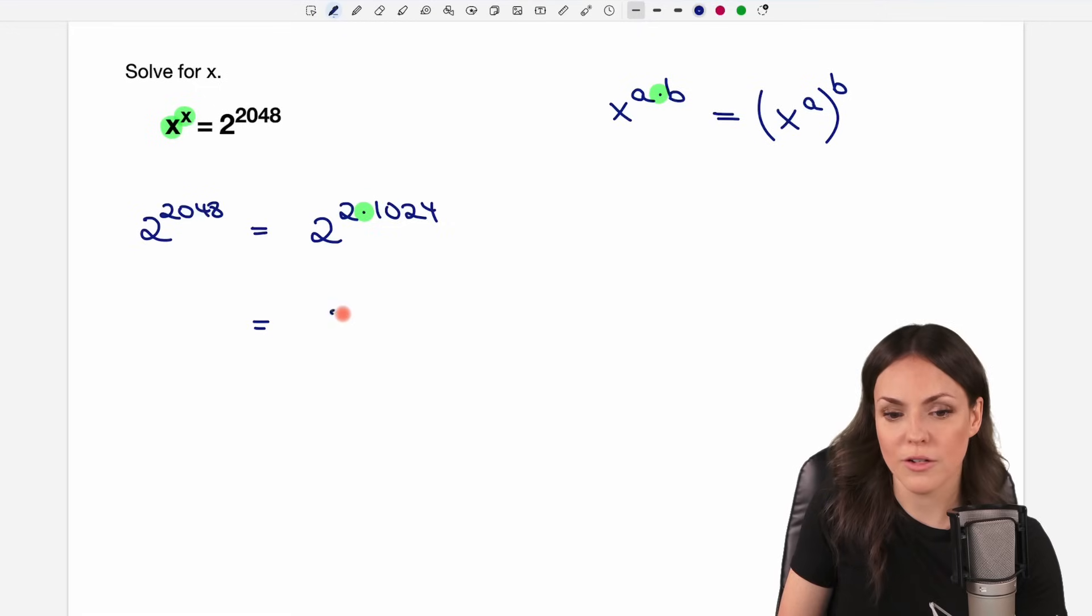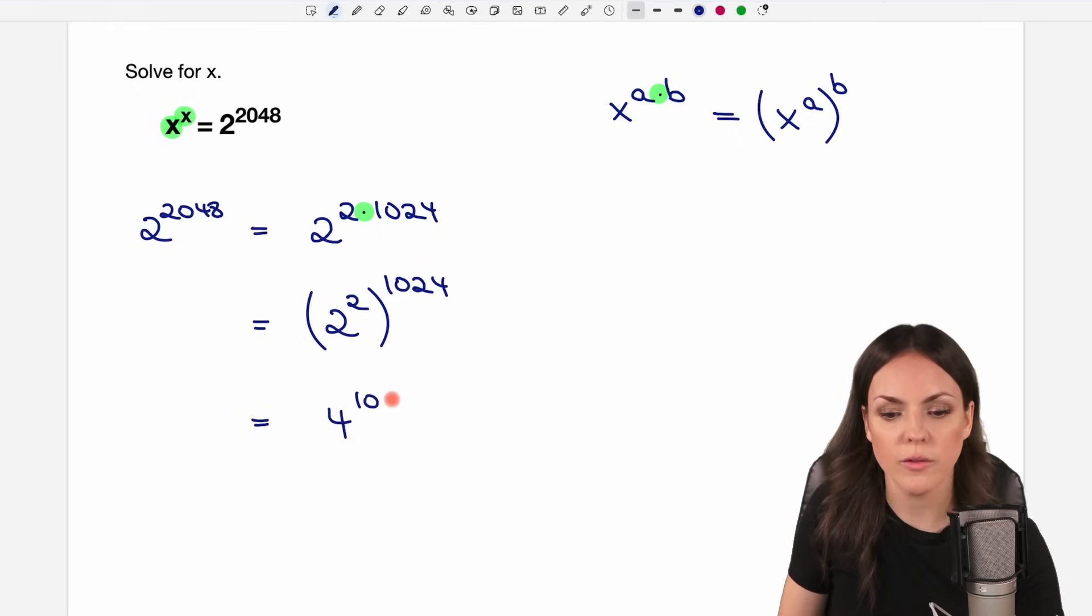We take our base, our 2, and raise it to the first part of the product, to the power of 2. Then we write this in parentheses, and then we raise it to the second part of the product, we raise it to 1024. Because now we can calculate this. 2 to the power of 2 just equals 4, and then we have 1024 as an exponent.